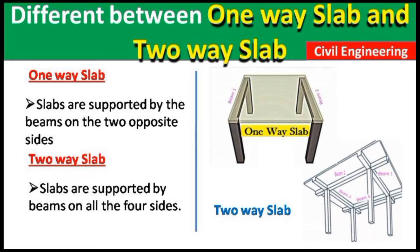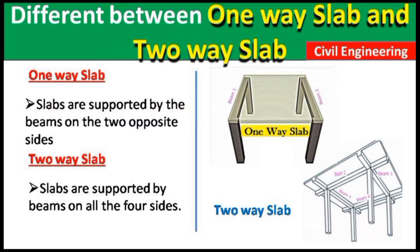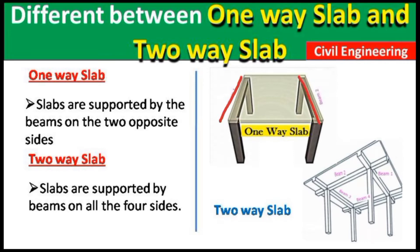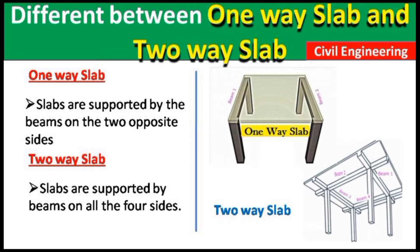The first difference: in a one-way slab, the slab is supported by beams on two opposite sides only. You can see here — this slab has one beam on this side and another beam on the other side, and it is supported on these two beams only.